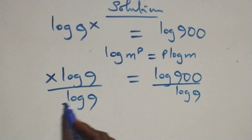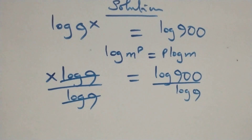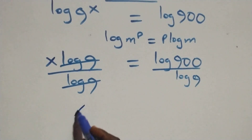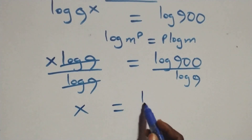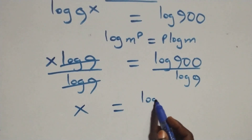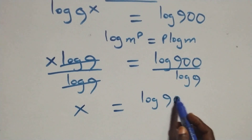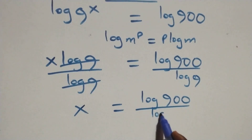Which implies log 9 cancels on each side. And we have x equals to log 900 over log 9.